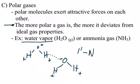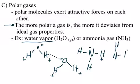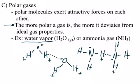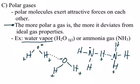Ammonia is another polar gas. The nitrogen is the negative end and the hydrogen is the positive end. There's a force of attraction between ammonia molecules. Because polar gases have the most forces of attraction compared to all three categories, polar gases are the ones that behave the least like an ideal gas — in other words, they behave more like a real gas.